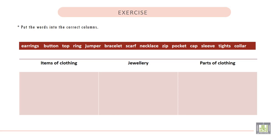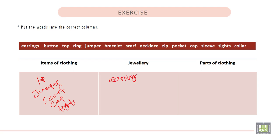Exercise: Put the words into the correct columns. Here we have three columns and you are required to put the words into the correct columns. Number one: Items of clothing — Top, Jumper, Scarf, Cap, and Tights. Jewelry — Earrings, Ring, Bracelet, and Necklace.